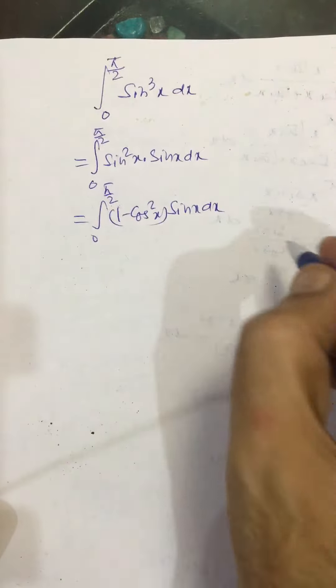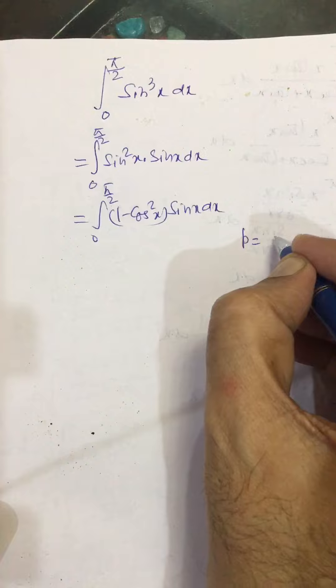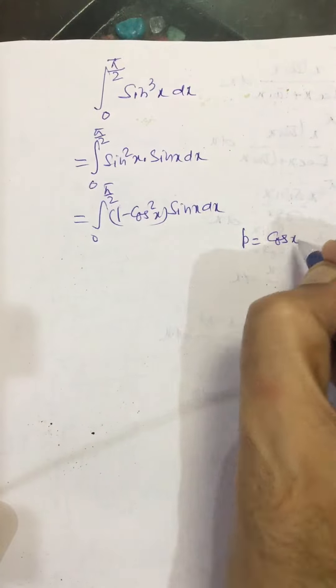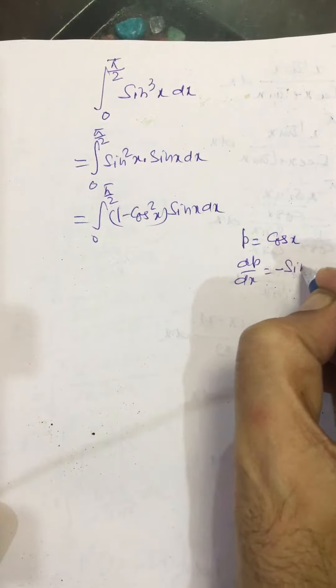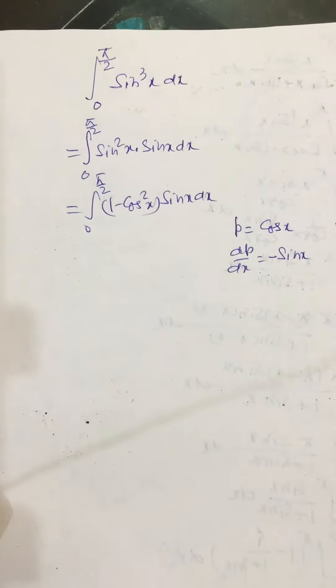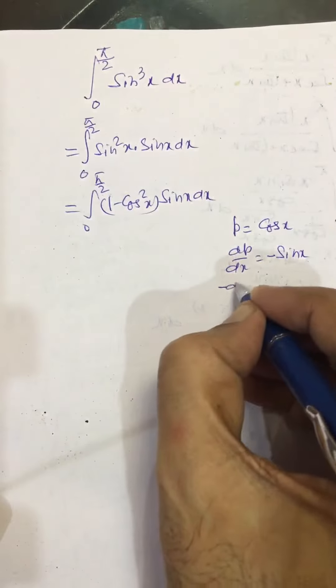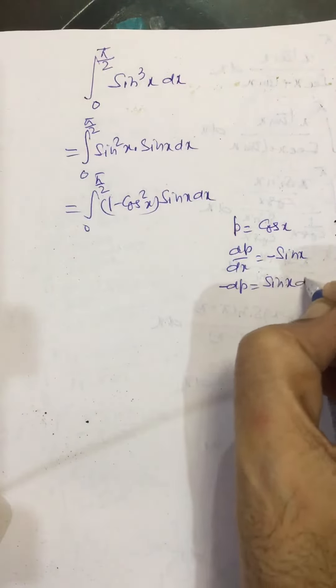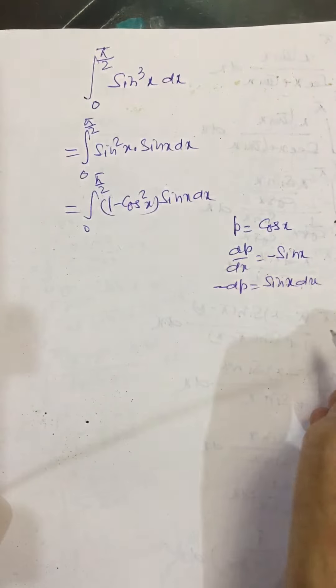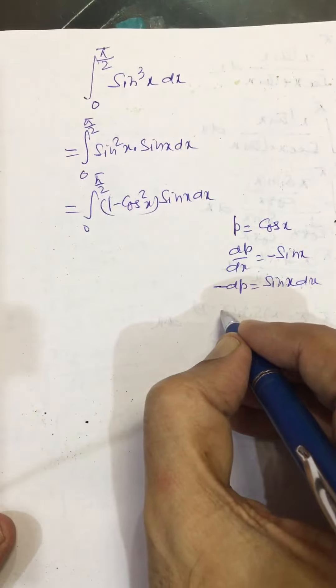We put p equal to cos x. So dp upon dx equals minus sin x, or minus dp equals sin x dx.